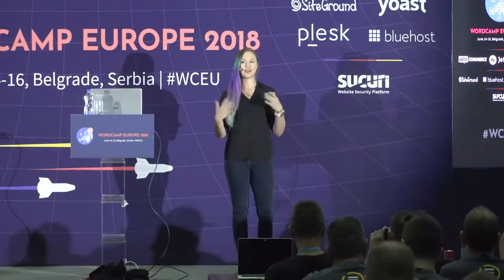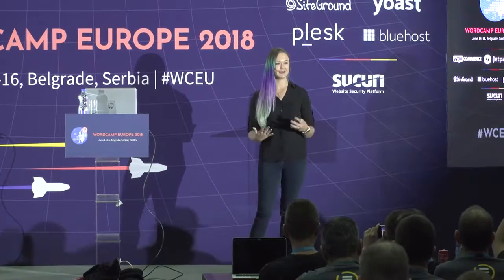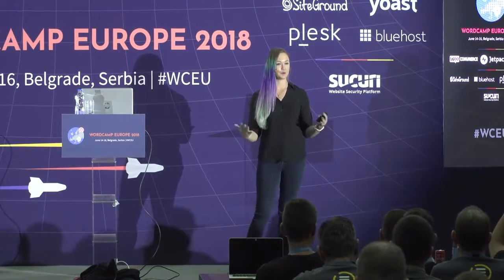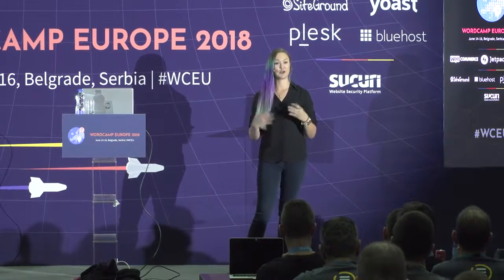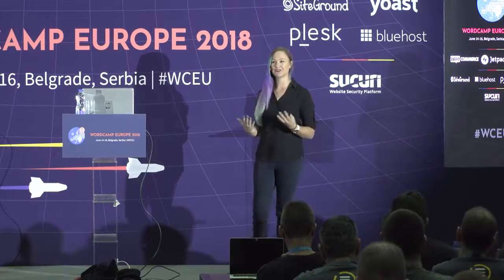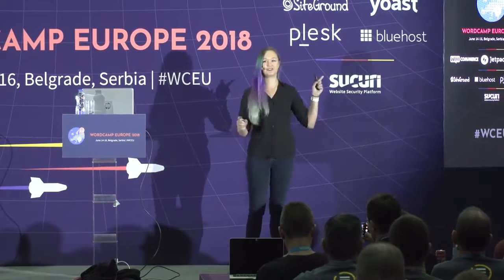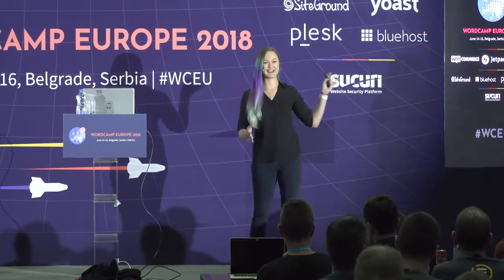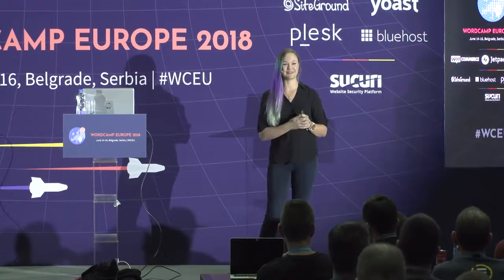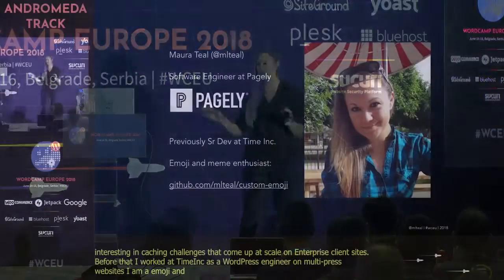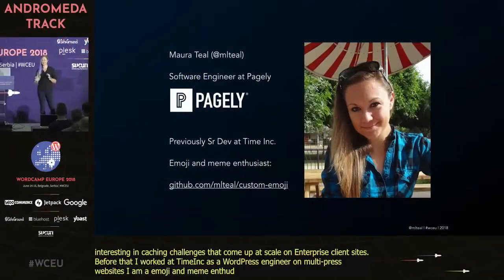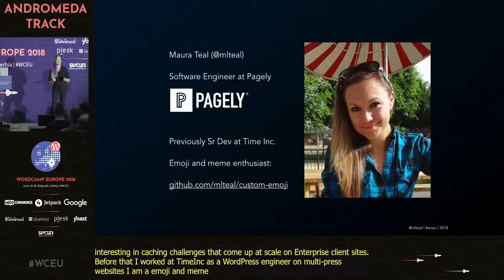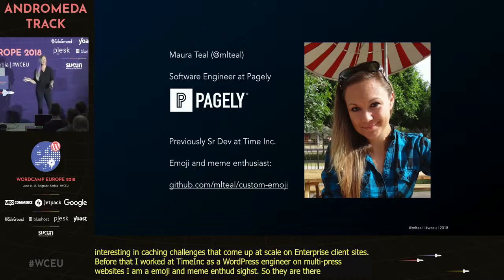Before that, I worked at Time Inc. as a WordPress engineer working on large multi-site networks. I'm also a bit of an emoji and meme enthusiast, so you can find my Slack emoji repo — feel free to add a pull request or a request there. They're all formatted and ready to go, and I am always happy to chat about it.